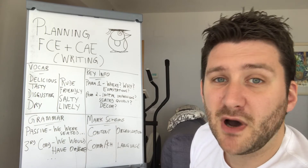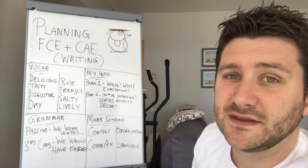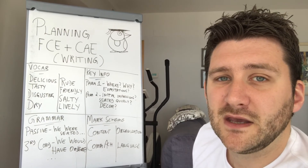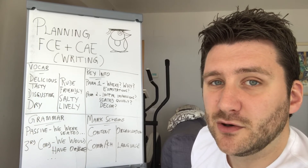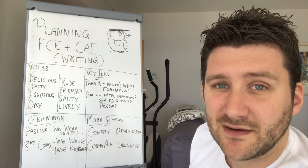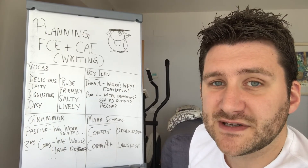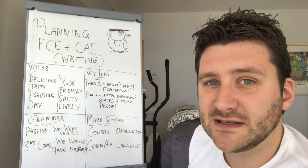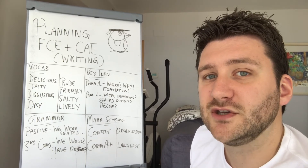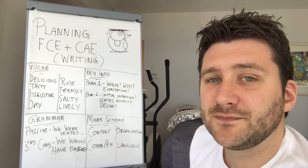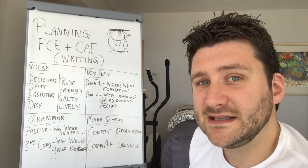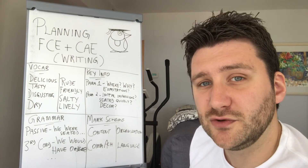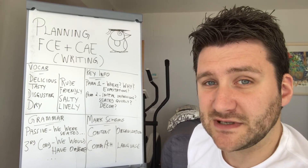The final part is the mark scheme — the criteria they use to mark the writings. First, content: always think to yourself as you're writing, is it relevant, am I answering the question? If you refer back to your plan and ask yourself this question all the time, you are less likely to be distracted and write things which are not relevant. Second, communicative achievement: have you communicated clearly? Is the piece of writing intelligible? Are you using the correct register — formal, neutral, or informal? Think very carefully when you're writing this because it's very easy to make mistakes.